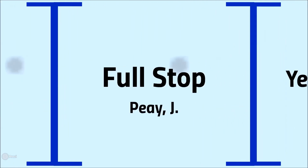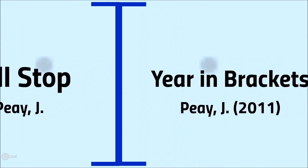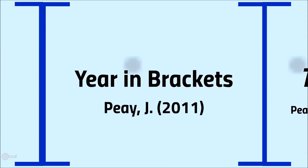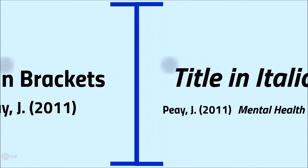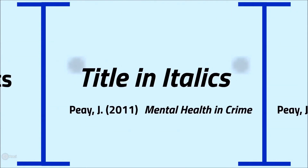The full stop is there to show that the name has been abbreviated. Then comes the date in brackets, followed by the full title of the book.